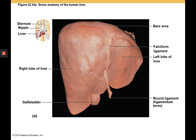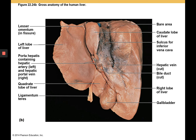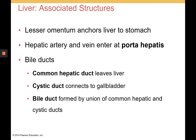Here we have the right lobe and left lobe of the liver, as well as the caudate lobe and quadrate lobe on the posterior side. The small sac on the posterior side is the gallbladder. The lesser omentum anchors the liver to the stomach. The hepatic artery and vein enter at the porta hepatis. The bile ducts associated with the liver include the common hepatic duct, cystic duct, and common bile duct.